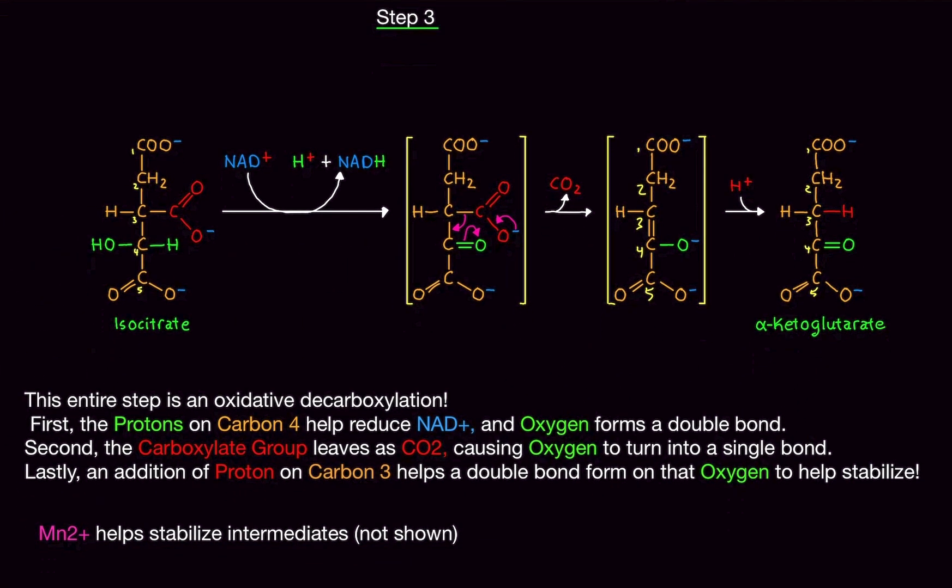Now, the one thing you also need to know is there's an invisible player here called manganese. Manganese helps stabilize these intermediates here for the time being until the electrons can move. Otherwise, the entire thing would just break apart, right? And that would not be good. So manganese here is a key player. I did not draw it here because it's kind of invisible, right? But it's helping stabilize. That is step 3.